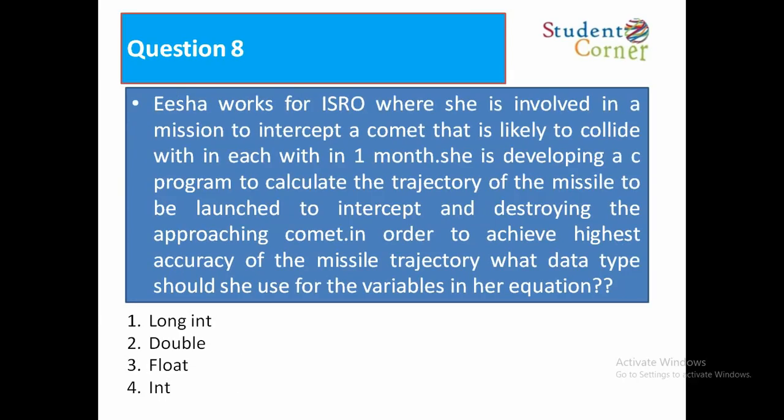Question 8: Isha works for ISRO on a mission to intercept a comet likely to collide within one month. She's developing a C program to calculate the missile trajectory to intercept and destroy the approaching comet. To achieve highest accuracy, what data type should she use? Options: 1. long int, 2. double, 3. float, 4. int. Answer: double, because as discussed previously, double is the most accurate data type.